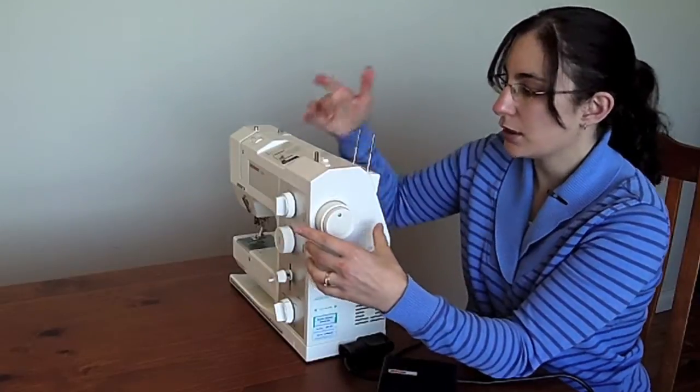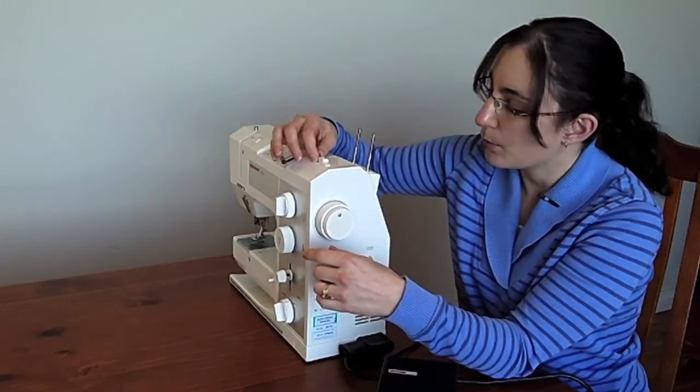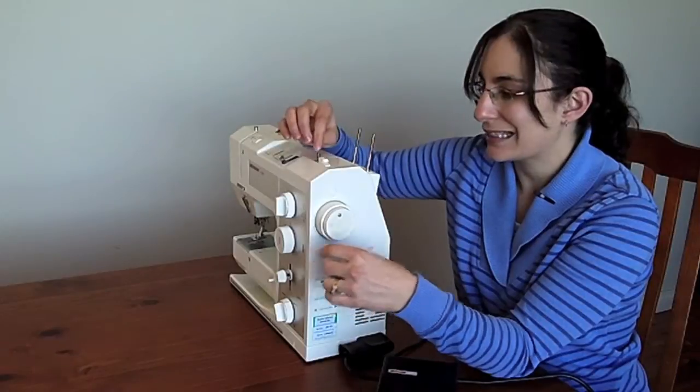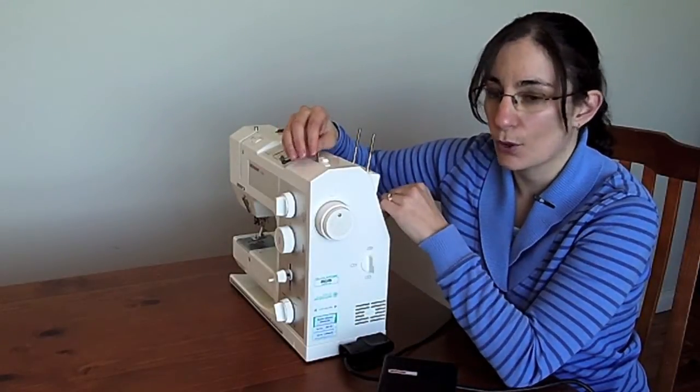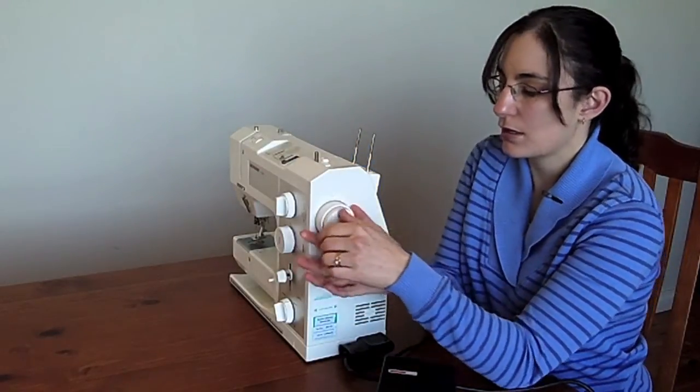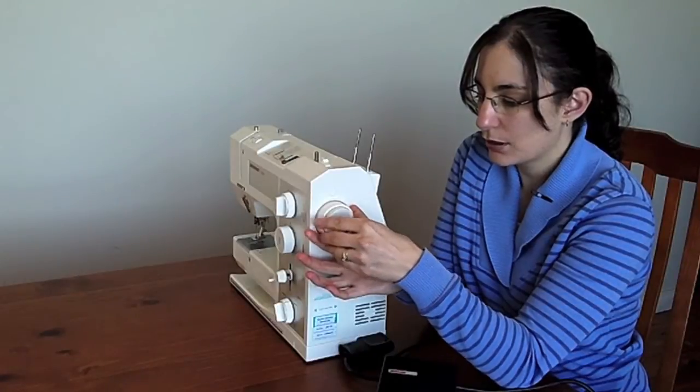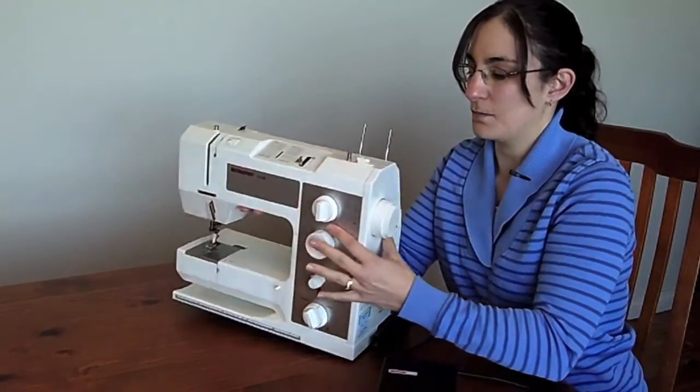That disengages the machine, so when you go to put thread onto your bobbin, it stops the needle from going up and down. You just need to remember to put your hand wheel back in place when you're done with that.